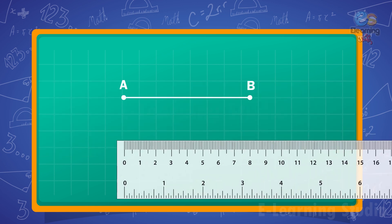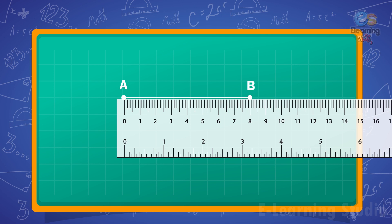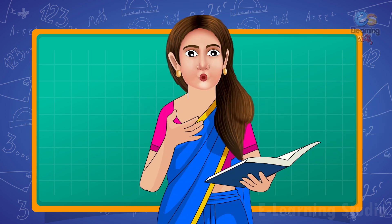To measure the length of line segment AB, we place the edge of the ruler along the line AB with the zero mark on one end A, and read the ruler mark where the line ends at B. If the line ends at the 8 mark on the ruler, then the length of line AB is 8 centimeters.